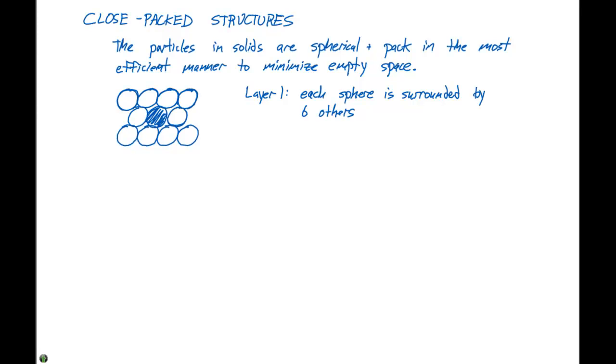we can see that it's surrounded by one, two, three, four, five, six other spheres. So this is what I mean by in this layer, we have each sphere surrounded by six other spheres.